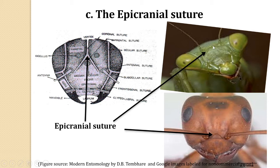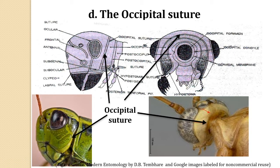In the diagram you can see the epicranial suture, its two lateral arms, and the stem known as the coronal suture. The next suture is the occipital suture. The occipital suture is a horseshoe-shaped or inverted U-shaped suture, well evident on the posterior part of the head of orthopteroid insects.